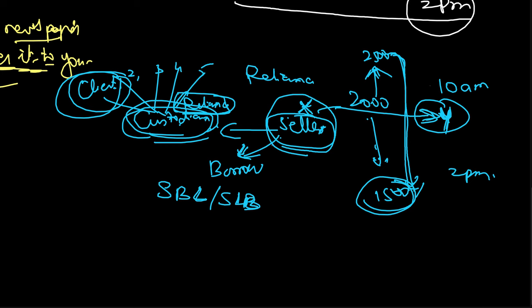The seller pays fees for holding or borrowing these securities for as long as he wants to hold them. After one month, the price comes down as expected by Mr. X, and he makes a large profit. When calculated correctly, this profit will exceed all the charges paid throughout the entire deal. This is how you plan for profits through securities borrowing and lending, or through short selling.